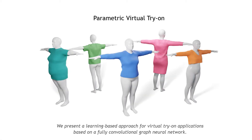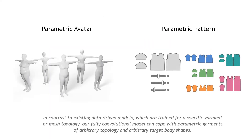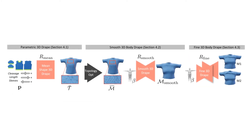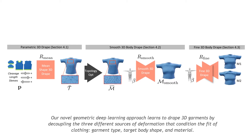We present a learning-based approach for virtual try-on applications based on a fully convolutional graph neural network. In contrast to existing data-driven models, which are trained for a specific garment or mesh topology, our fully convolutional model can cope with parametric garments of arbitrary topology and arbitrary target body shapes. Our novel geometric deep learning approach learns to drape 3D garments by decoupling the three different sources of deformation that condition the fit of clothing: garment type, target body shape, and material.